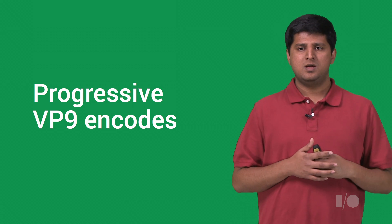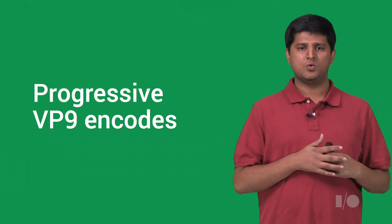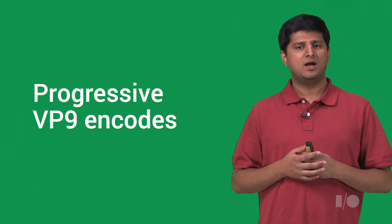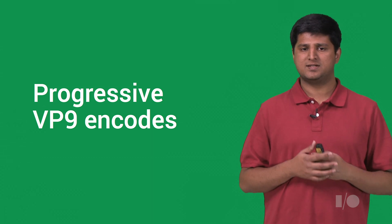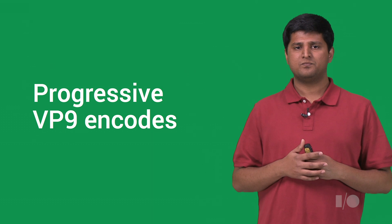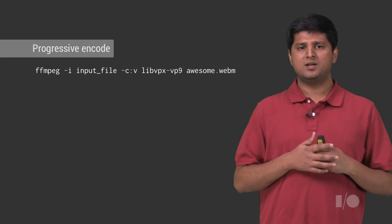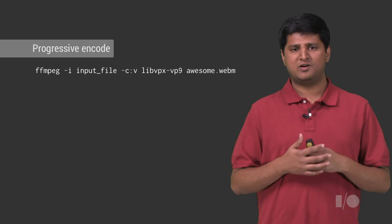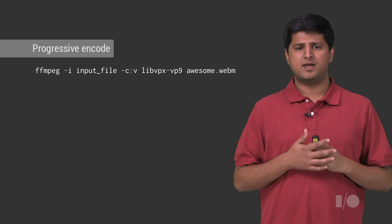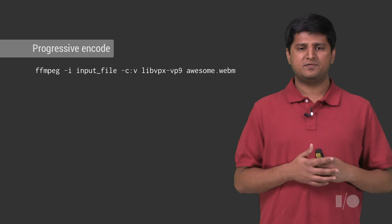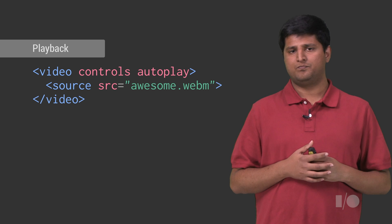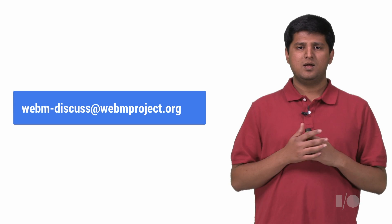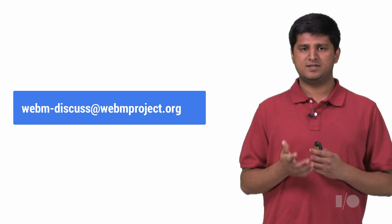First, the simple progressive encode. Let's say that you just want to encode a video and want it to be played back across multiple devices. In other words, all you want to do is just host a video and play it back using the video tag by using the hosted URL as the source. Progressive encodes are simple and will allow any supported VP9 player to download and play the file. Examples include Chrome, Firefox, and Android. Here is how you create a progressive VP9 encode. All you need to do is point FFmpeg to your input file and ask it to use the VP9 encoder. Here's how you play back this video. That was simple, wasn't it? If you have ideas on making it even simpler, we welcome all your thoughts at this email.